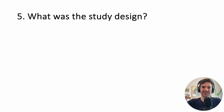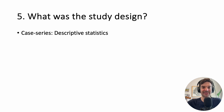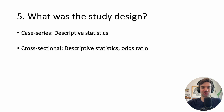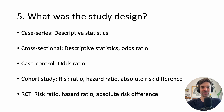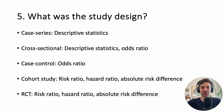You can also get a sense of what stats to expect just from the study design. For a case series: descriptive statistics only. A cross-sectional study: descriptive statistics and maybe an odds ratio. A case-control study: you're getting an odds ratio. A cohort study or a randomized trial: see the slide. If you're unsure about case-control versus cohort, we'll include a link to the video explaining those.